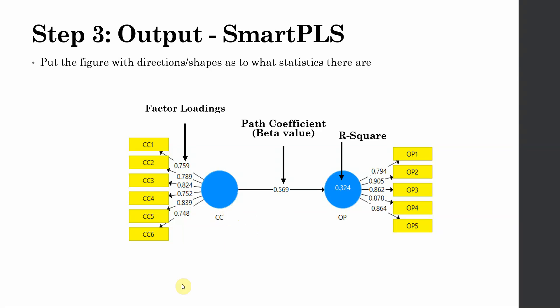Now what if you had more than one variable pointing towards OP here? Let's assume the value is the same. Now in that case, 32.4% variance in OP would have been accounted by CC and the other variable because there are now two arrows pointing towards the endogenous variable.